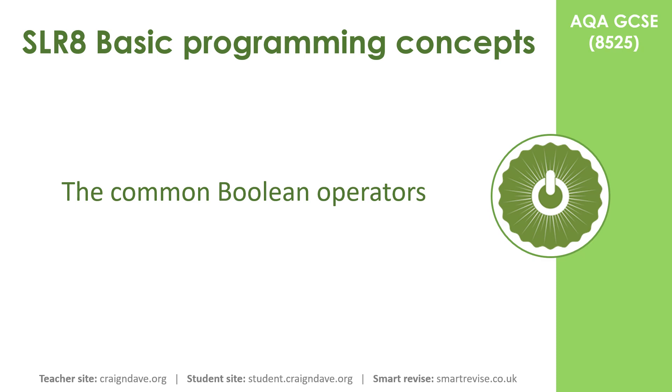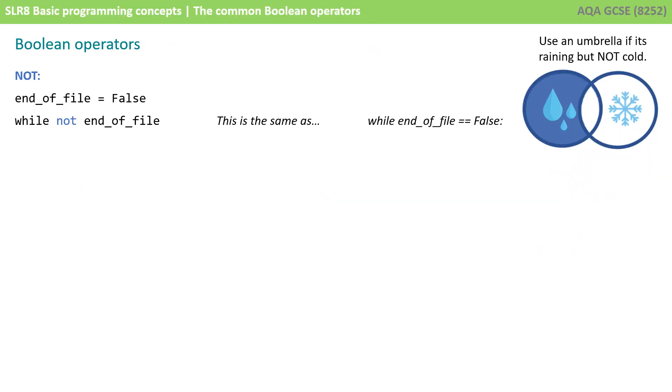In the previous video we looked at common arithmetic and comparison operators. In this one we look at the common Boolean operators. There are three Boolean operators you need to be aware of and how you can use them in programming.